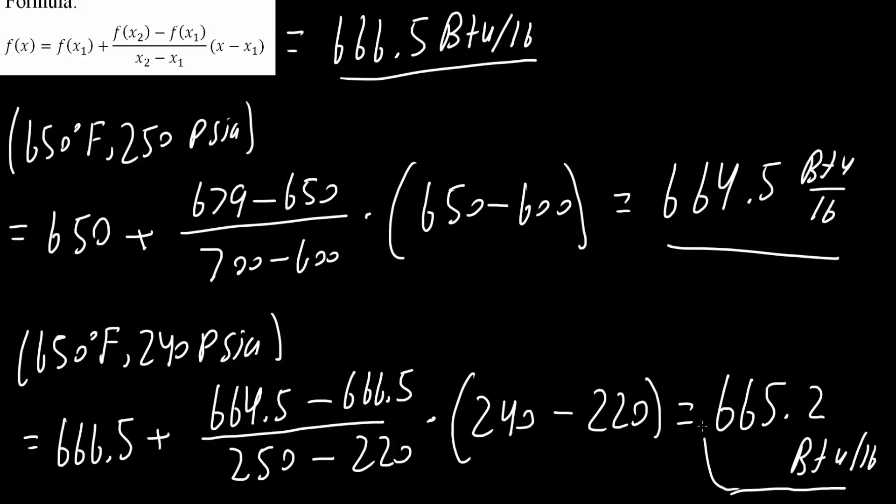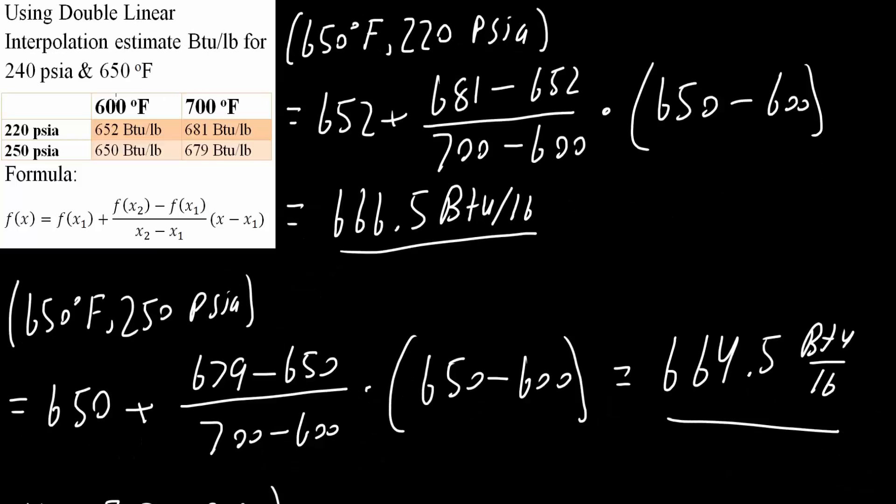Now we can think, does this answer even make sense? We're saying at 650°F and 240 PSI, we would get 665.2 BTUs per pound. Let's check. As temperature increases from 600 to 700, the enthalpy increases.